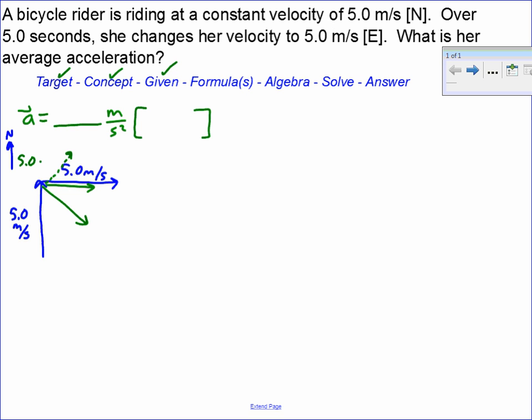The formula for acceleration when we have an initial velocity, a final velocity, and a time: acceleration equals final velocity minus initial velocity, which is delta v, divided by the time it took to change.